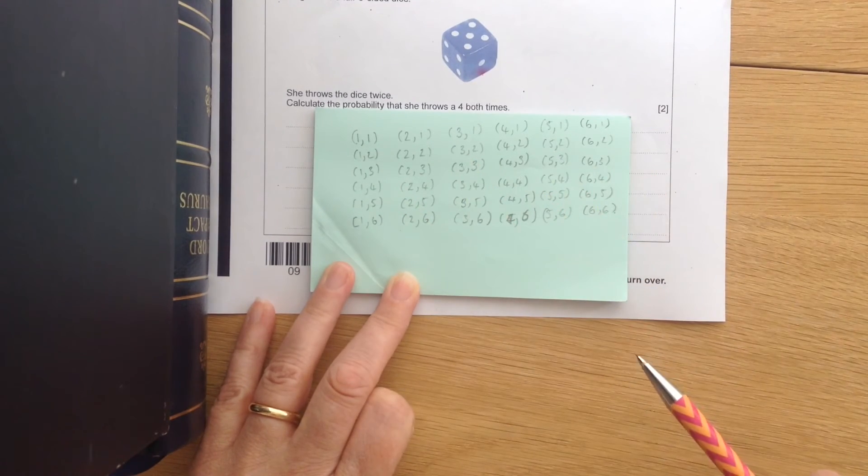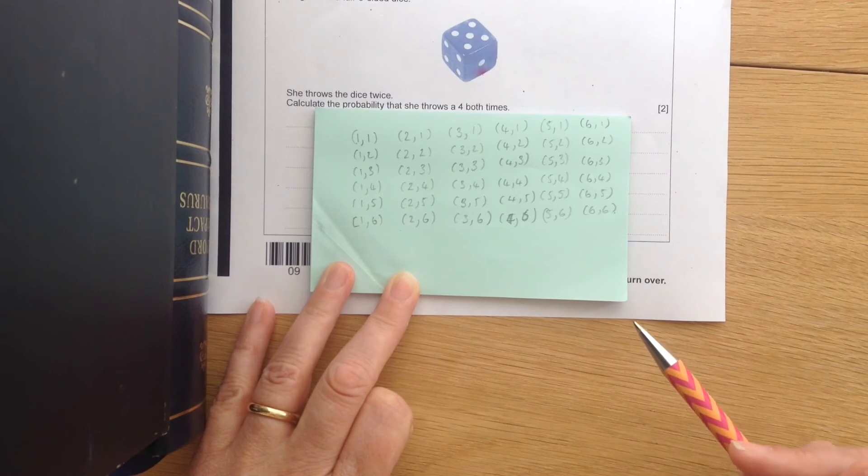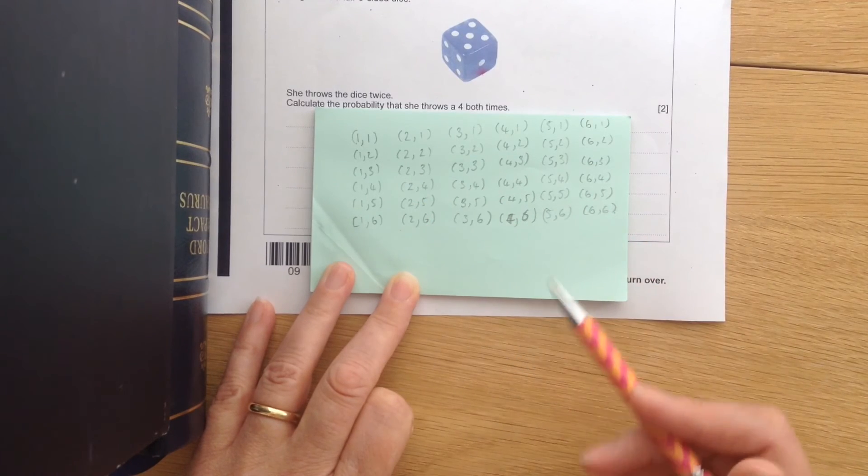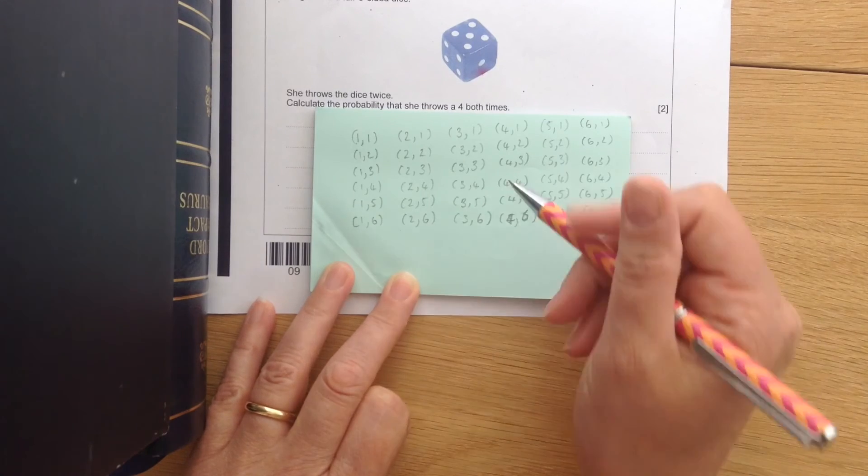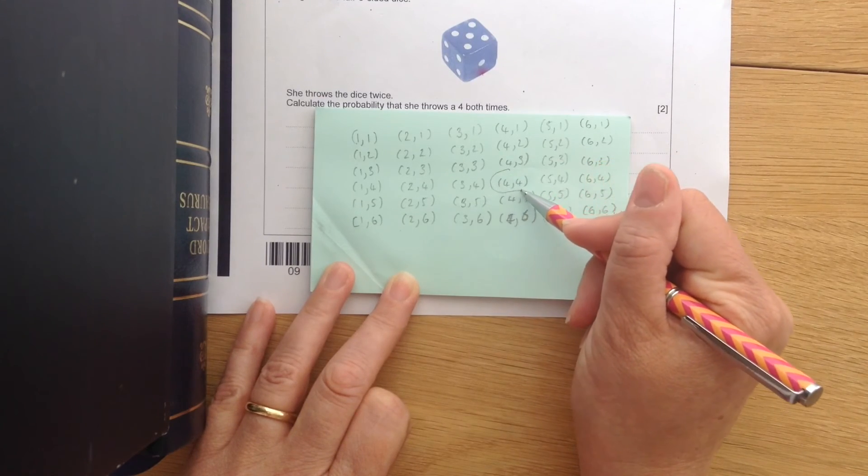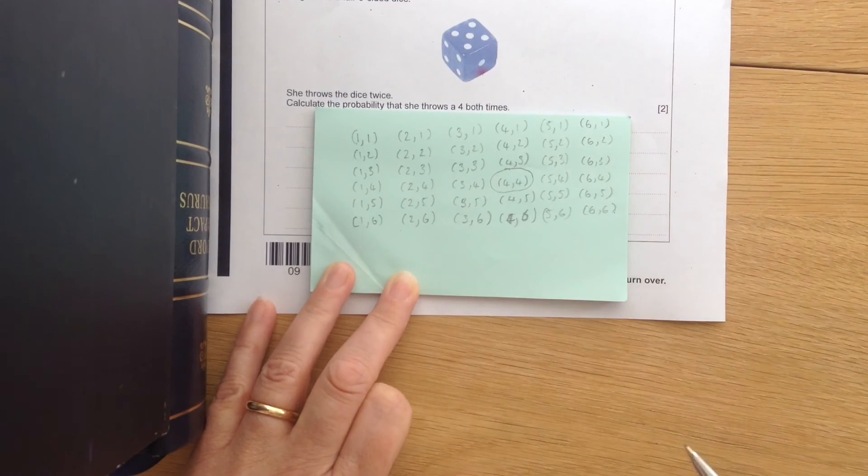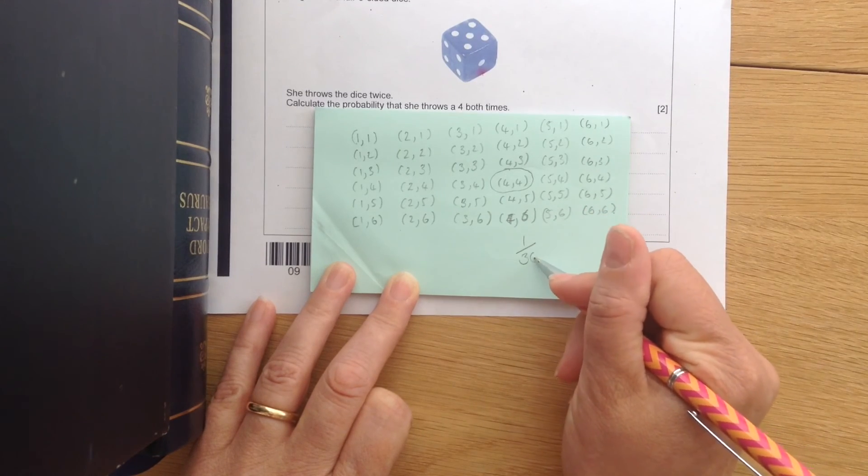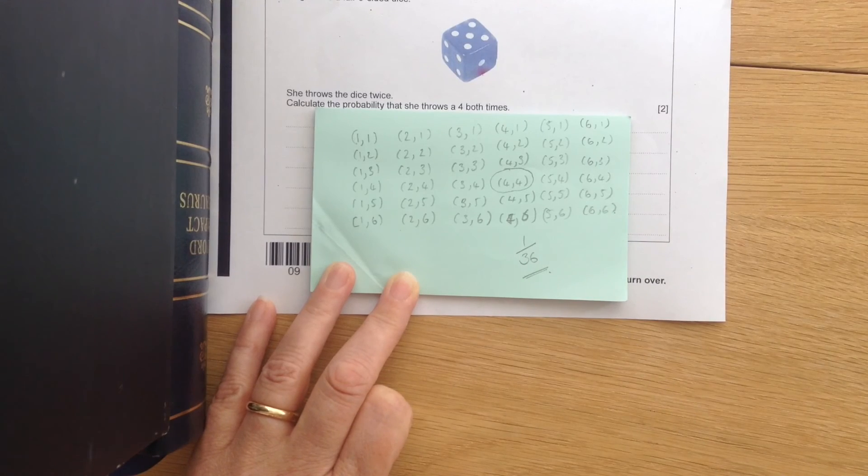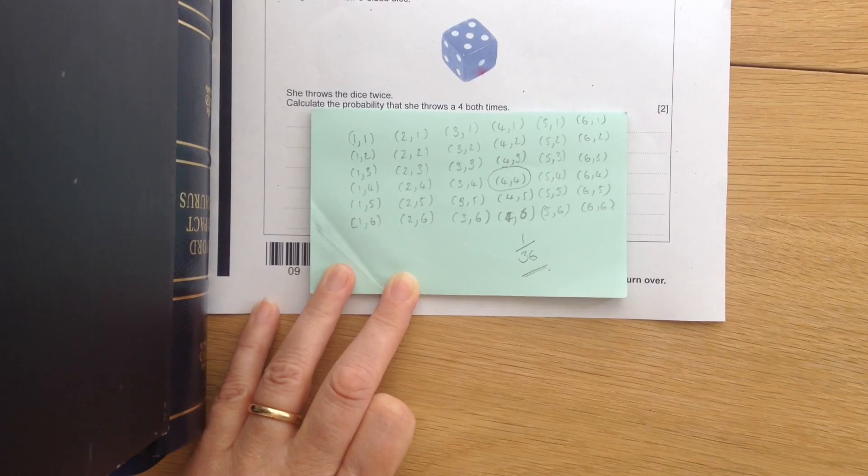You can get all these different outcomes when you throw the dice twice. So there's thirty-six outcomes there, thirty-six equally likely outcomes. And if we look, one of those is our double four. So we've got one out of thirty-six equally likely outcomes. Okay, so there's two methods of doing that question.